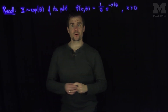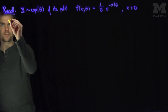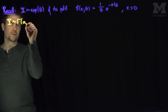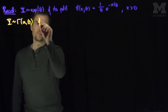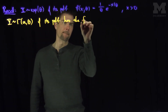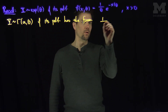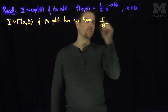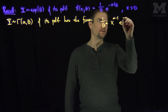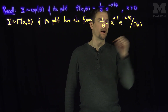Exponential distributions are a subset of a family called gamma distributions. Y is a gamma distribution with parameters alpha and theta if its PDF has the form (1/θ^α) · x^(α−1) · e^(−x/θ), with a normalizing factor gamma of alpha.